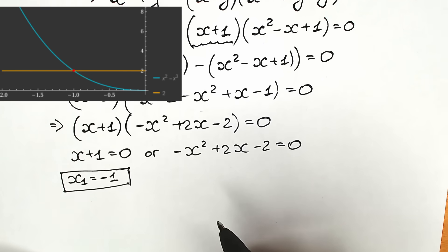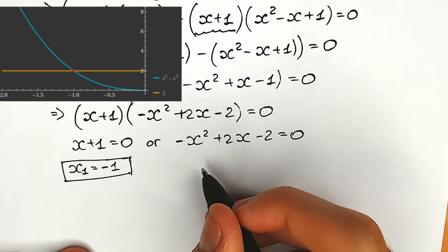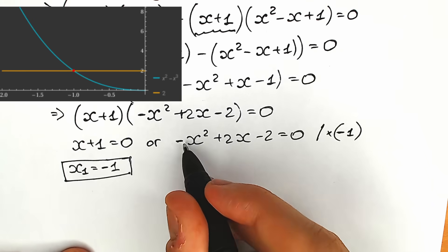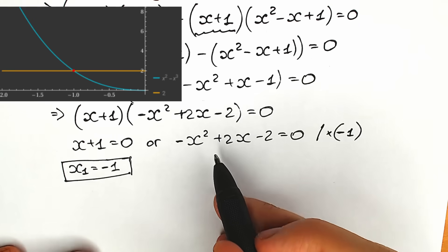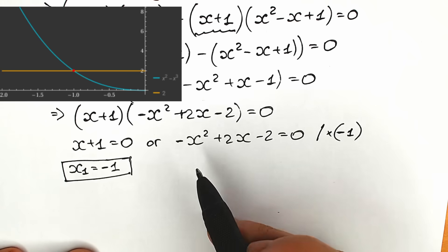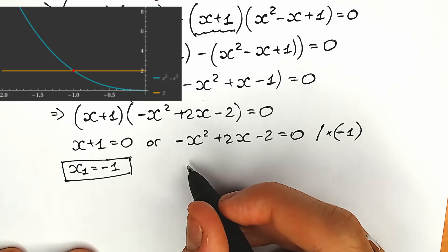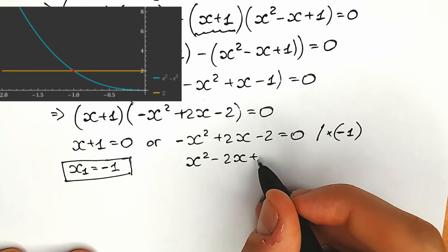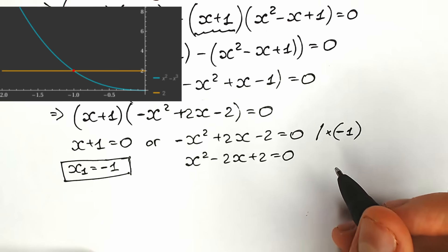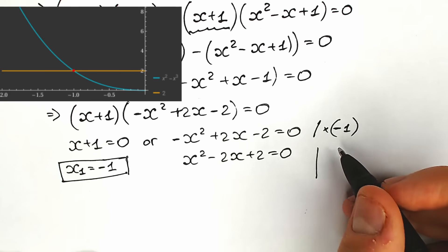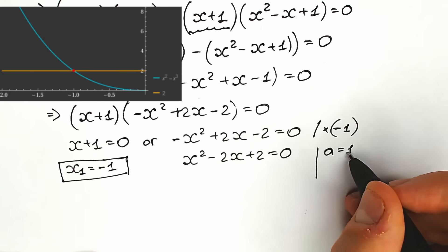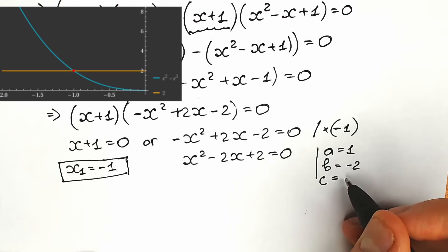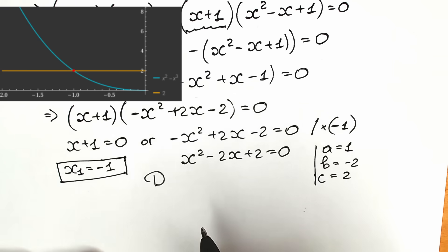Now let's solve the second quadratic equation. First, we multiply both sides by minus 1, because we need a positive leading coefficient — a classic quadratic form. So we get x squared minus 2x plus 2 equal to 0. Using the standard coefficient method, we have a equals 1, b equals minus 2, and c equals 2.